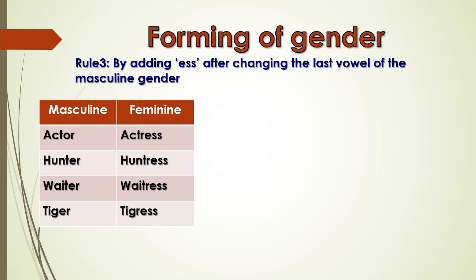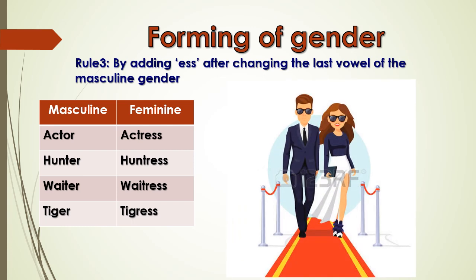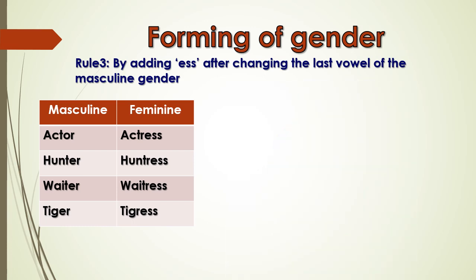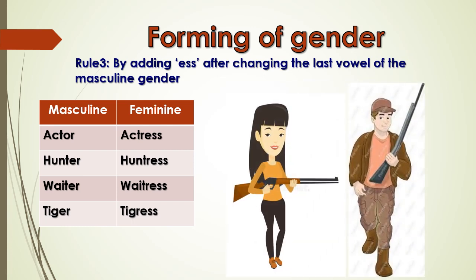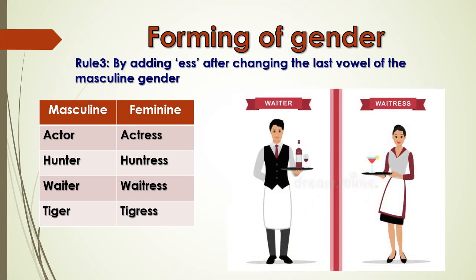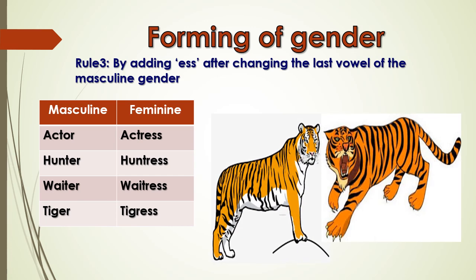Another rule to form feminine gender from masculine gender is by adding -ess after removing the last vowel of the masculine word. For example: actor – actress; hunter – huntress; waiter – waitress; tiger – tigress.